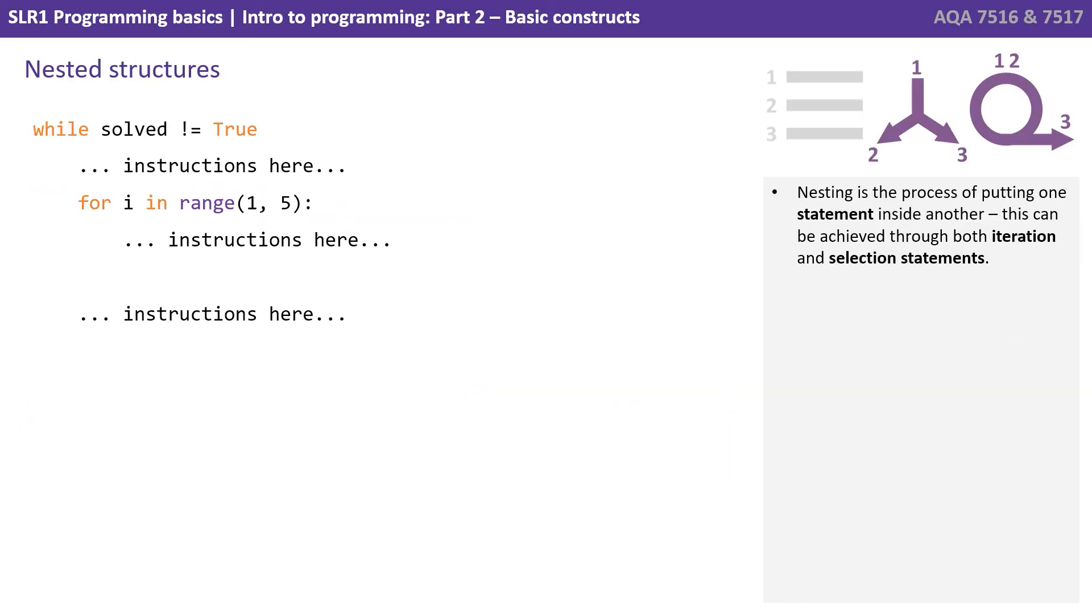It's also possible to nest statements inside one another. This can be achieved with both iteration and selection statements. Here you can see we have a for loop inside a while loop. While solved is not equal to true, do this stuff inside the while loop. And while we're in there, we have a count-controlled loop for i in range one to five. So we have a loop nested within a loop.